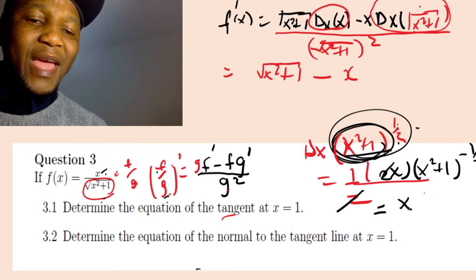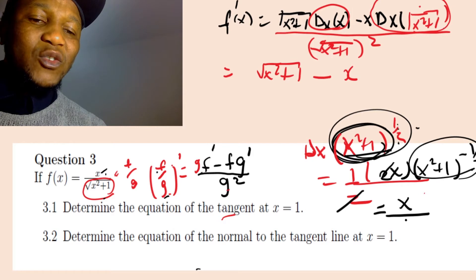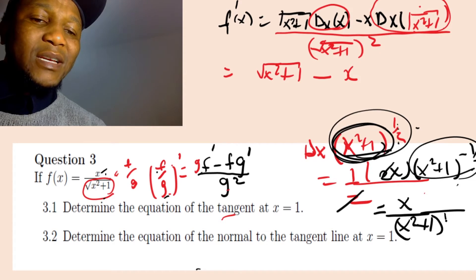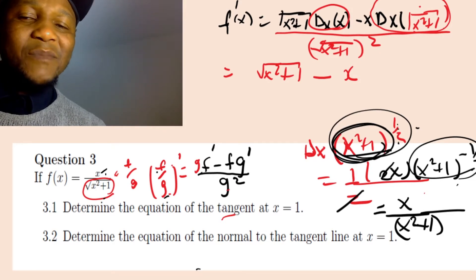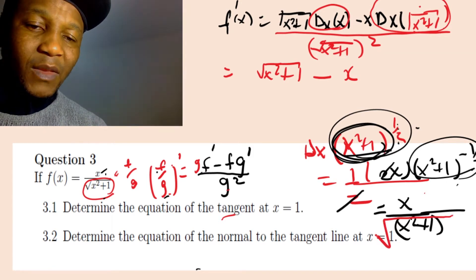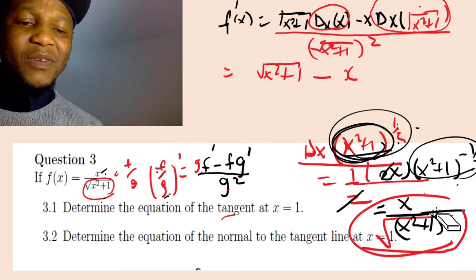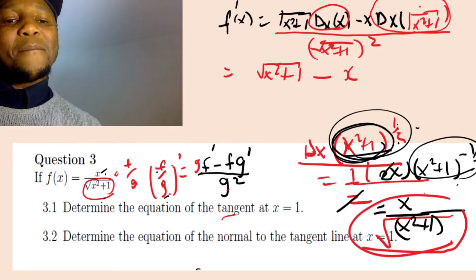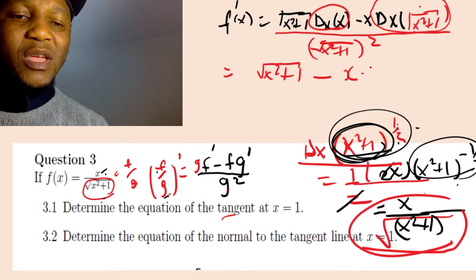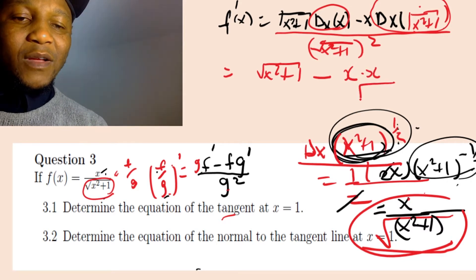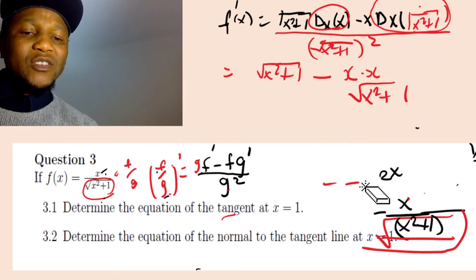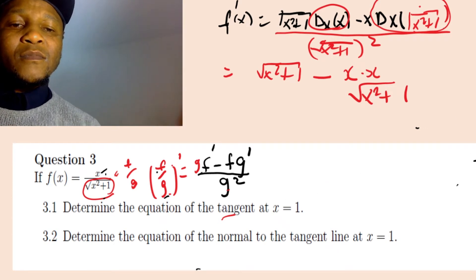We can simplify: the two cancels with the one half. So on top we have x over — and since x squared plus one to the power of negative one half means one over square root of x squared plus one — differentiating the denominator gives us x over square root of x squared plus one. Make sure you show this as part of the solution.